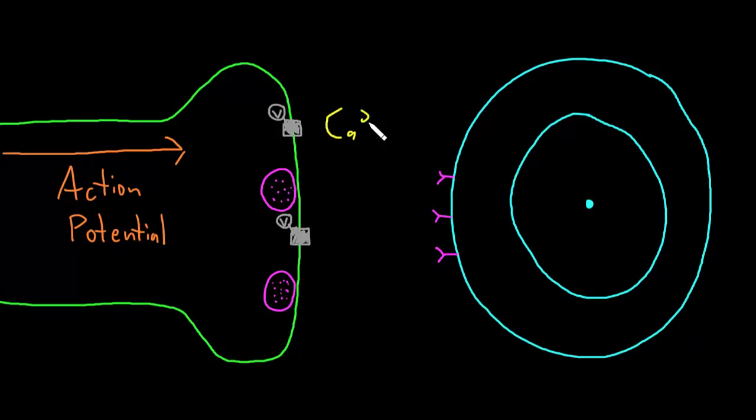When these voltage-gated calcium channels open, calcium will flow into the axon terminal because it's at a much higher concentration outside the neuron than inside. So it will flow in and increase the concentration of calcium inside the axon terminal. The increased concentration of calcium inside the axon terminal is going to cause changes to proteins on the synaptic vesicles and proteins on the presynaptic membrane of the axon terminal.